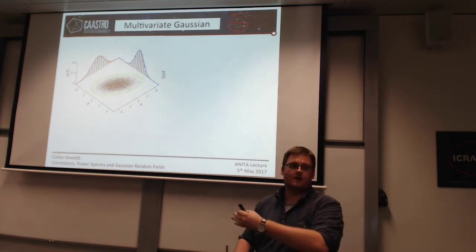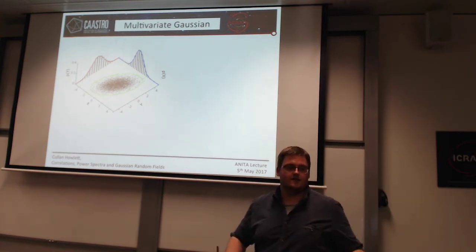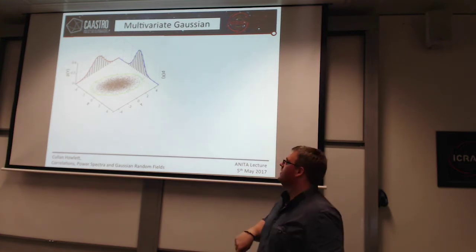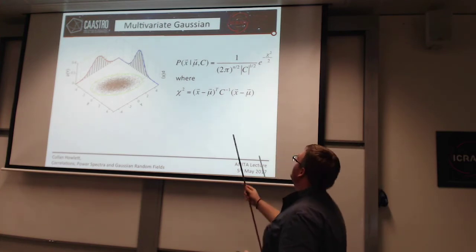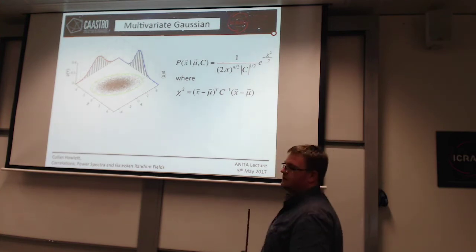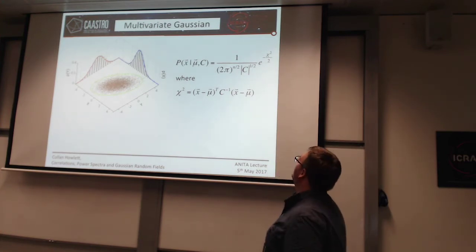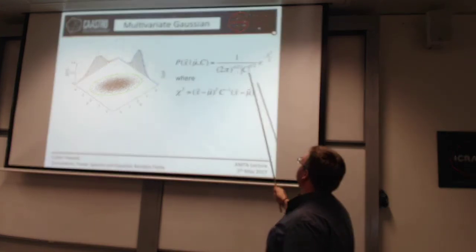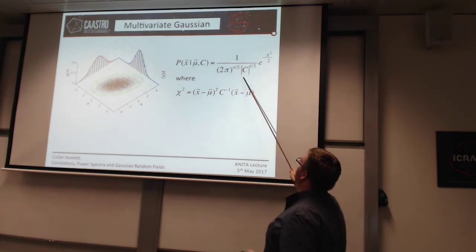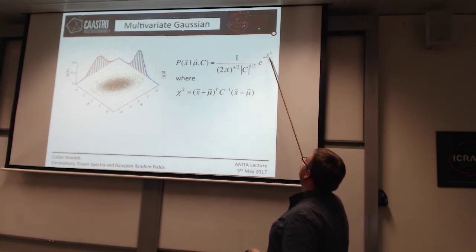For instance, say I've measured a bunch of apparent magnitudes on the sky and I also know the seeing on the sky — are these things independent or correlated? To describe these two things, you could assume a multivariate Gaussian. This looks very similar to a normal Gaussian distribution, but instead you've got a covariance matrix rather than a standard variance, and this chi-squared term is just the difference between your data and the mean, weighted by the covariance.